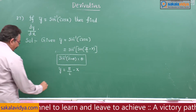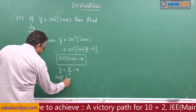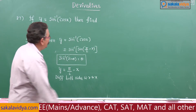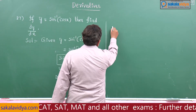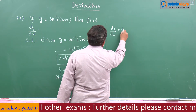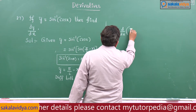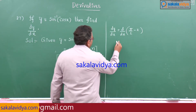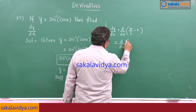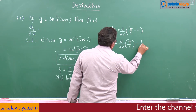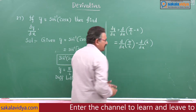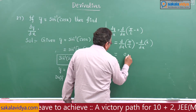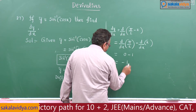Now, differentiate both sides with respect to x. dy by dx equals d by dx of (pi by 2 minus x), which equals d by dx of pi by 2 minus d by dx of x. Pi by 2 is a constant so its derivative is 0, and the derivative of x is 1. So we get minus 1. This is the answer.